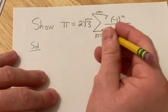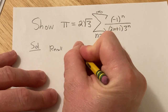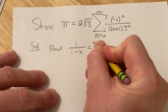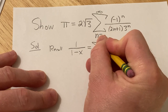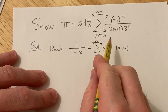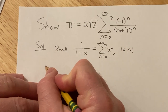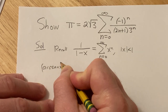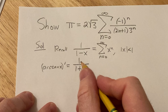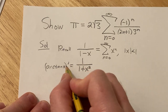The hint given in the original question was to use the power series for arctan. First, recall that when we're dealing with power series, this is really useful: 1 over (1 minus x) is equal to the infinite sum as n goes from 0 to infinity of x to the n, and this is valid if the absolute value of x is less than 1. Arc tangent doesn't look like this, but if you take arc tangent and take its derivative, you get 1 over (1 plus x squared). So we'll find a power series for this function, which is the derivative of arc tangent, and then integrate to get the power series for arc tangent.